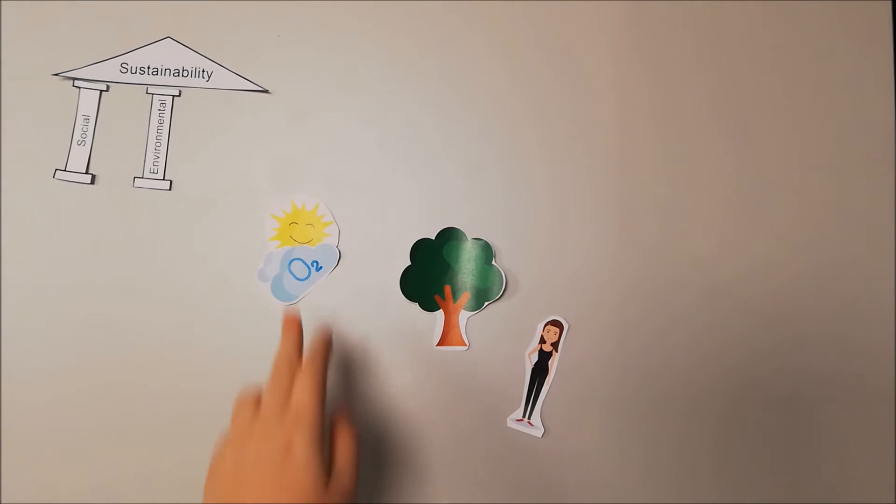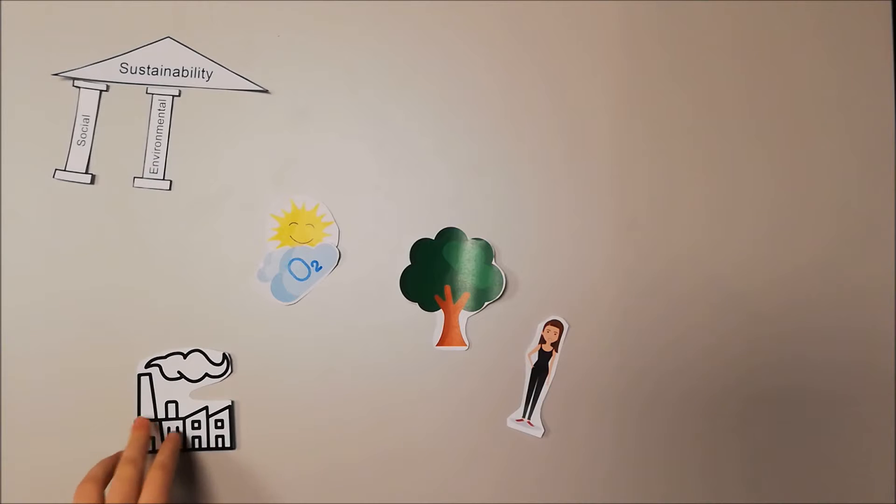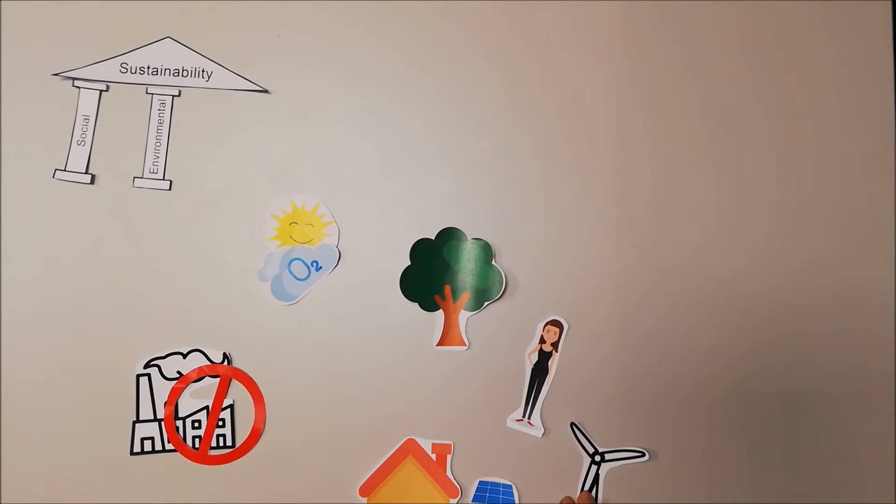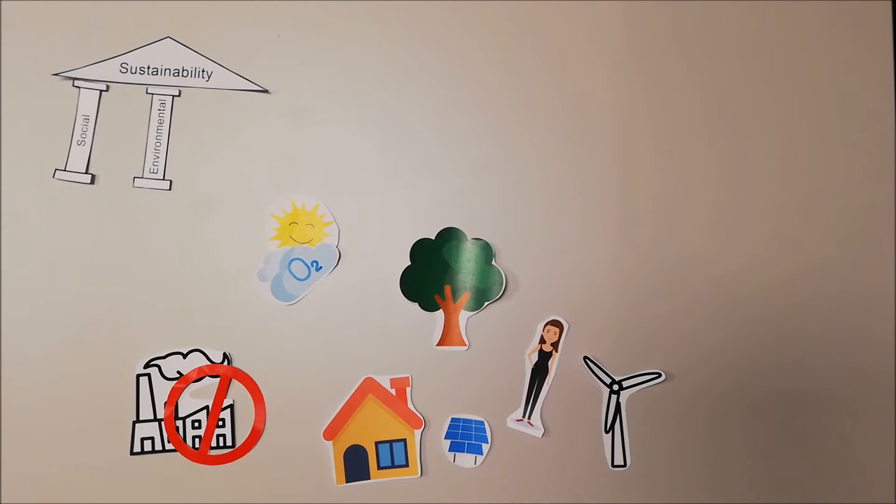In this utopia the use of fossil fuels has stopped, everything being sustainable. Her house is fitted with solar panels and a wind turbine for power. She has an electric car and there are plenty of trees everywhere.